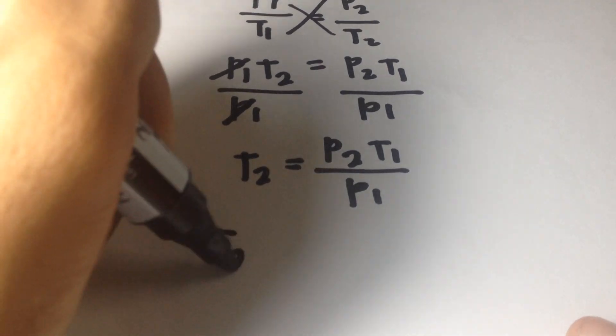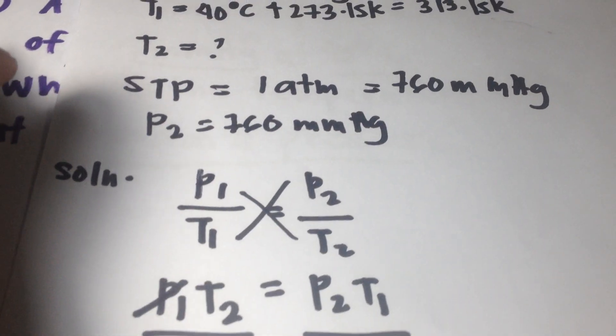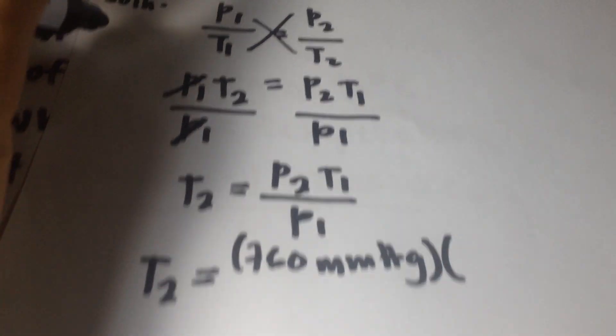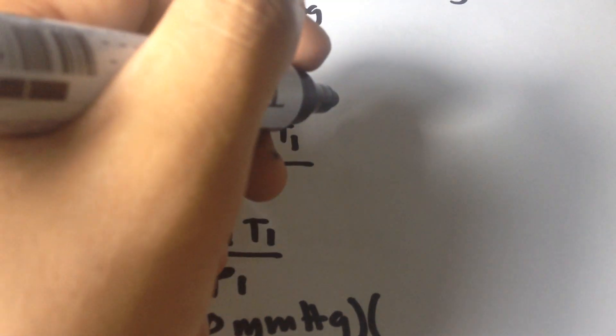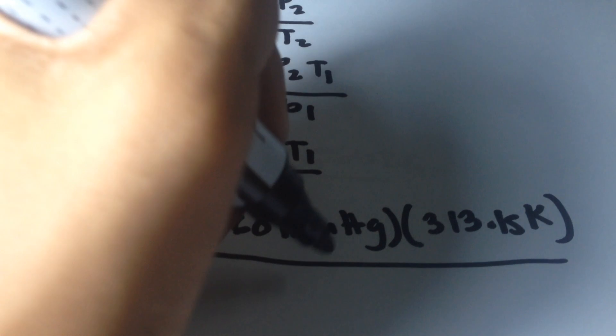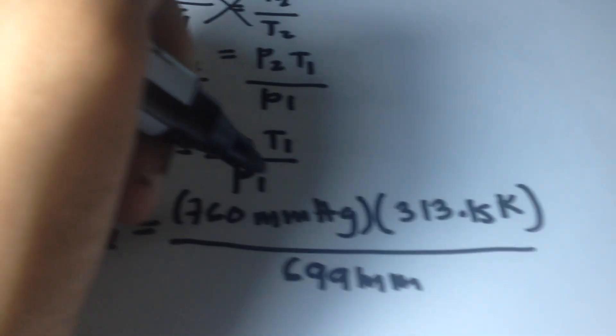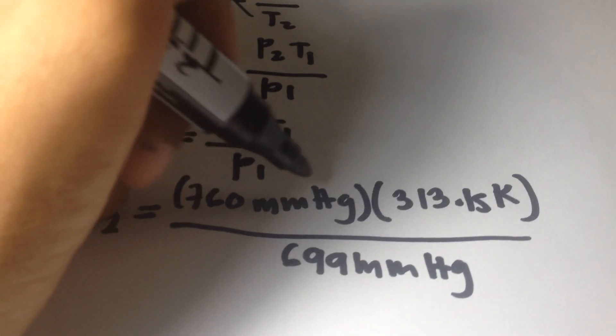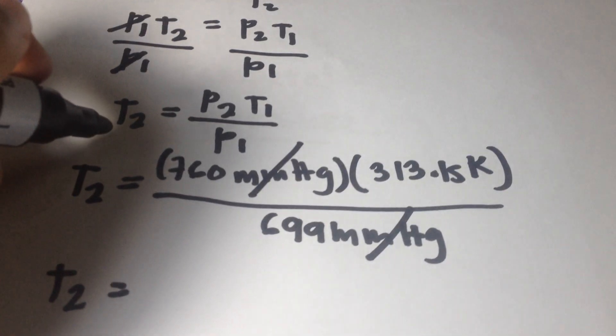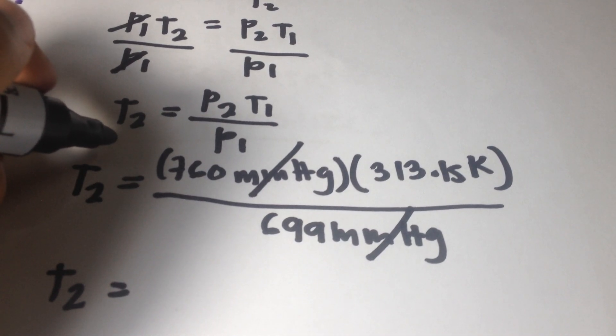T2 equals the pressure 2, which is the standard pressure, 760 mmHg, times T1 which is 313.15K, divided by pressure 1 which is 699 mmHg. Cancel out mmHg and the left is K.